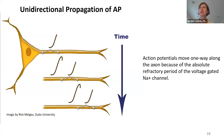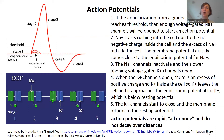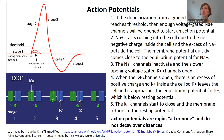Another thing: when we compare action potentials to graded potentials, where we said a bigger stimulus gives a bigger change — that is not the case with an action potential. If you get to threshold, you will have an action potential and the shape will be basically identical. Either you have one or you don't. Either you reach threshold or you don't. Those potentials are all-or-none. As they travel down the axon, they look exactly the same — they don't get smaller. That makes them very different from graded potentials.